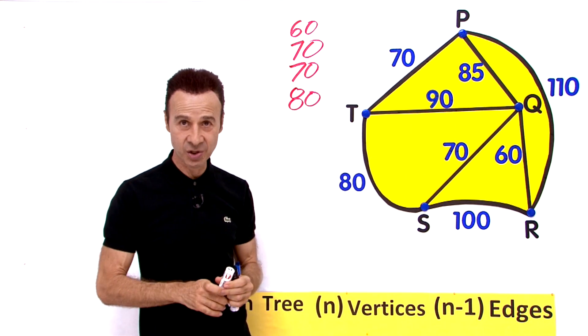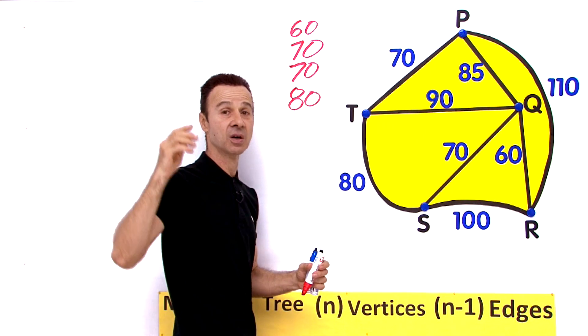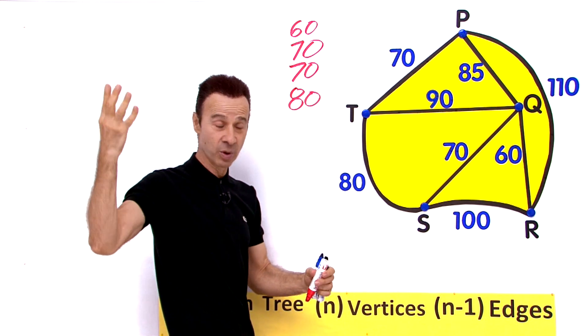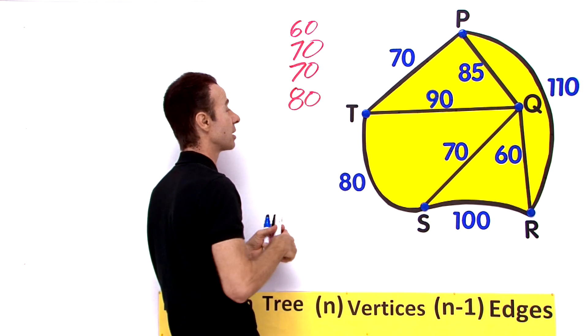Because we have as I said earlier 5 vertices, and we need how many edges? Four, because there is one less or one fewer edges. So four edges, we got them.